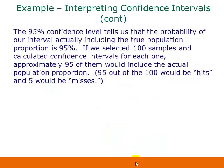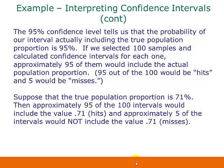To interpret this: the 95% confidence level tells us that the probability of our interval actually including the true population proportion is 95%. So if we selected 100 samples and calculated confidence intervals for each one, approximately 95 of them would include the actual population proportion — those would be hits — and 5 would be misses. For example, if the true population proportion is actually 71%, approximately 95 of the 100 intervals would include 0.71 as hits, and approximately 5 would not include 0.71 as misses.